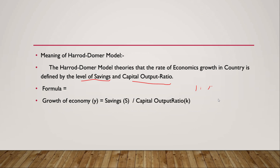How do we determine the level of savings and the capital output ratio? How do we determine the Harrod-Domar model's economic growth rate of a country? The formula is: growth of an economy is equal to savings divided by the capital output ratio.